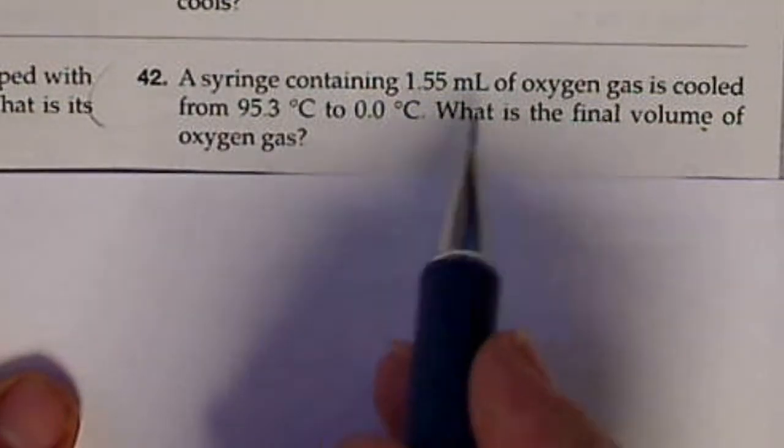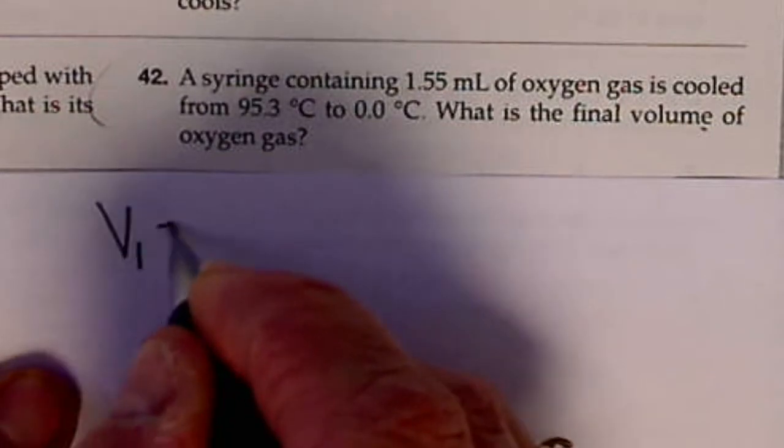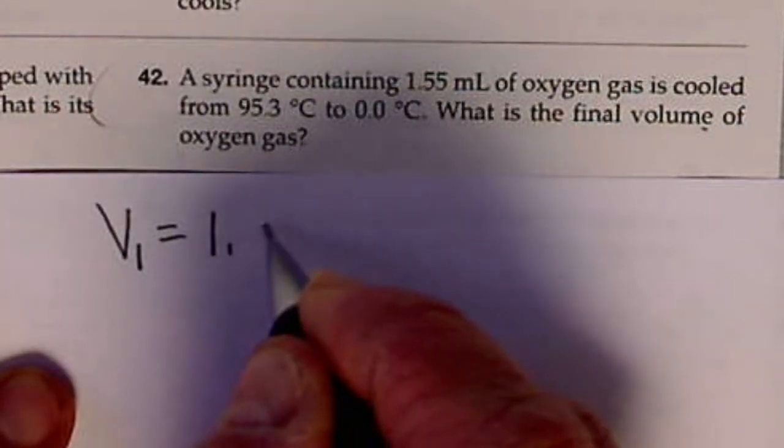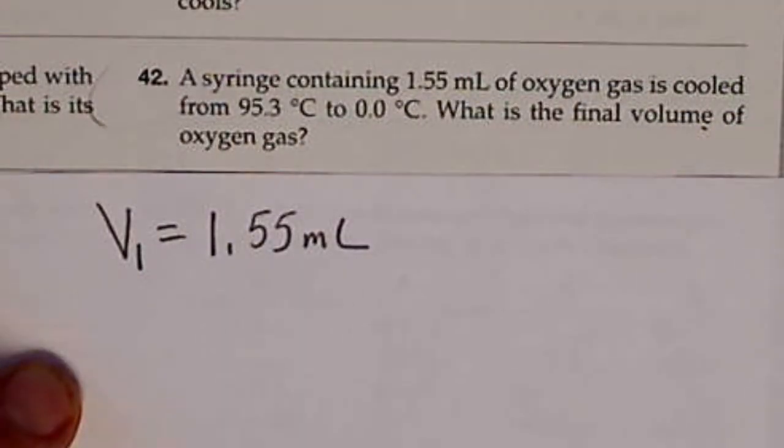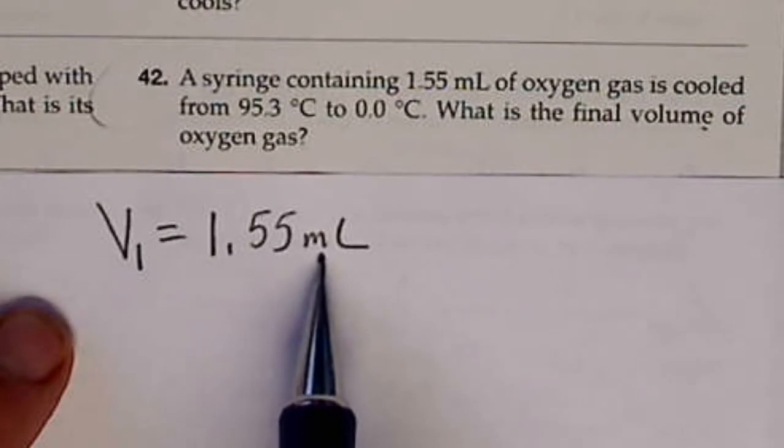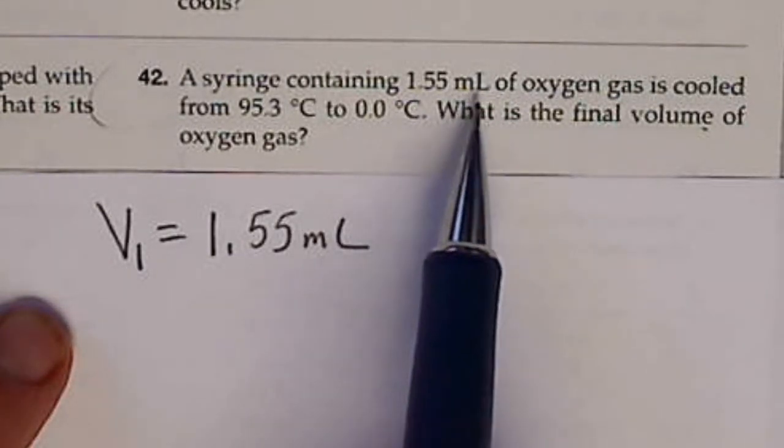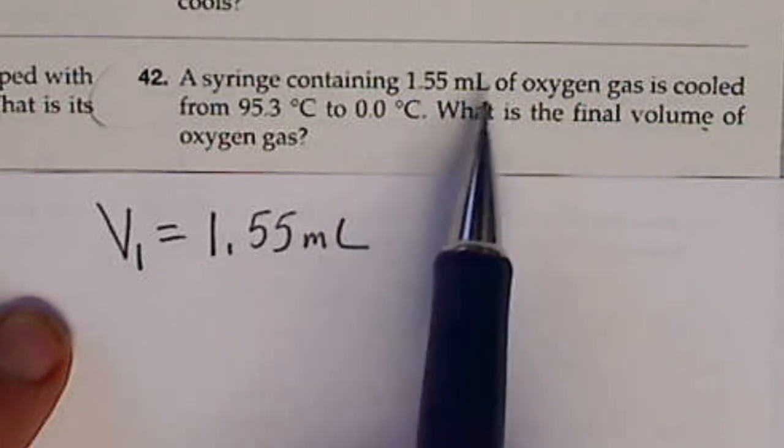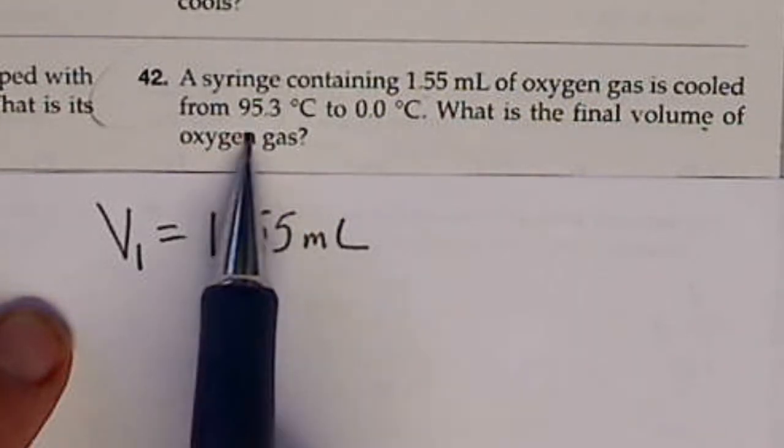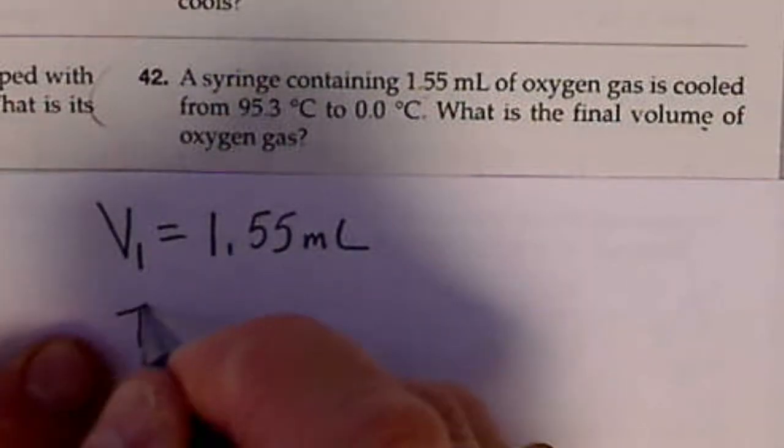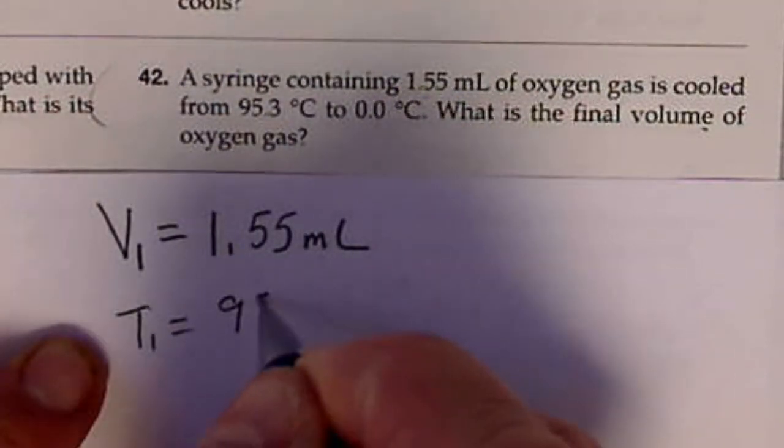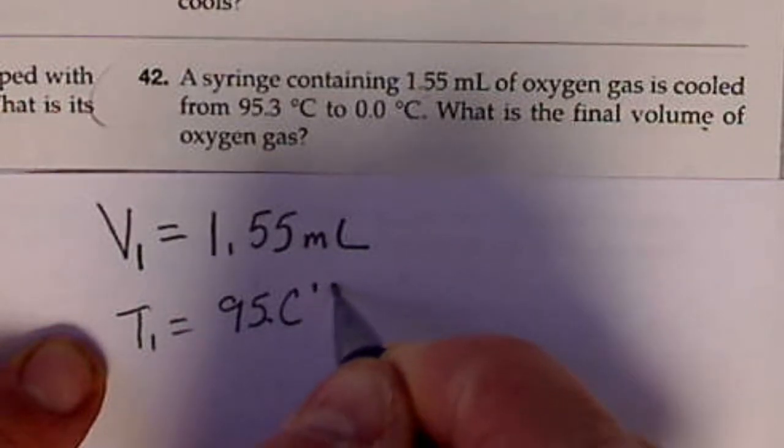So we know that V1 is 1.55 milliliters. The problem may not explicitly say the volume is that, but we know that a milliliter is a volume, and before it's cooled down to 0, that volume is at this temperature, 95.3. So T1 is 95.3 degrees Celsius.